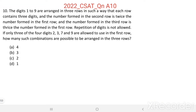Question 10. The digits 1 to 9 are arranged in 3 rows such that each row contains 3 digits. The number formed in the second row is twice the number formed in the first row, and the number formed in the third row is three times the number formed in the first row. Repetition of digits is not allowed.